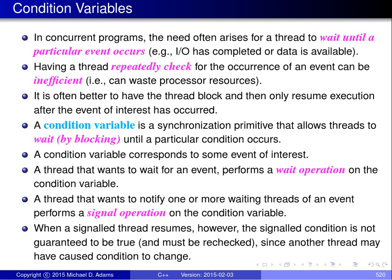Consider a simple example in which a condition variable might be used. Suppose we have a FIFO queue where one thread is writing elements to the queue and several threads are reading elements from the queue. When a thread attempts to read an element from the queue, if the queue is empty, rather than having the thread spin in a loop waiting for the queue to become non-empty, we want the thread to block instead. So we use a condition variable to signal the condition that the queue is not empty. If the thread attempts to read from the queue and the queue is empty, the thread performs a wait operation on the condition variable. And when a thread adds an element to the queue, the thread also performs a signal operation to indicate that the queue is not empty.